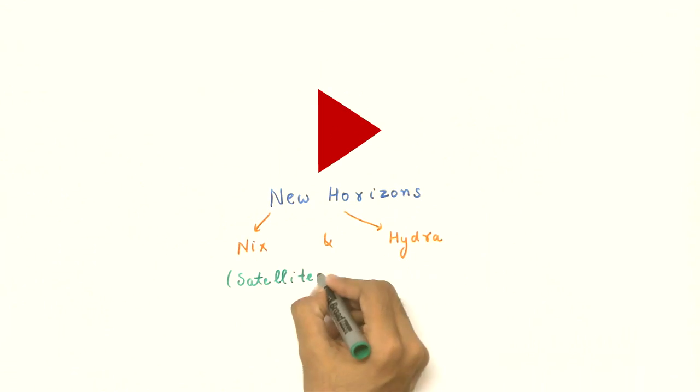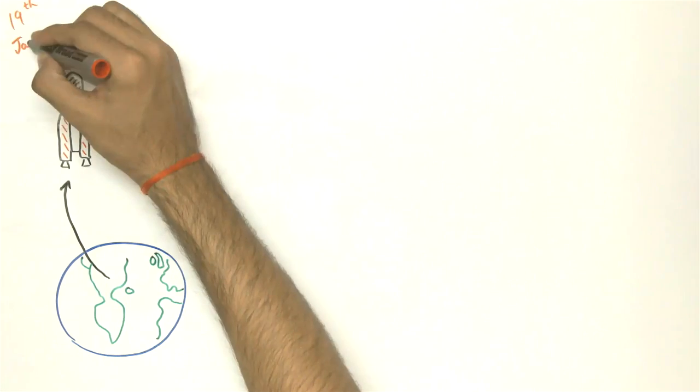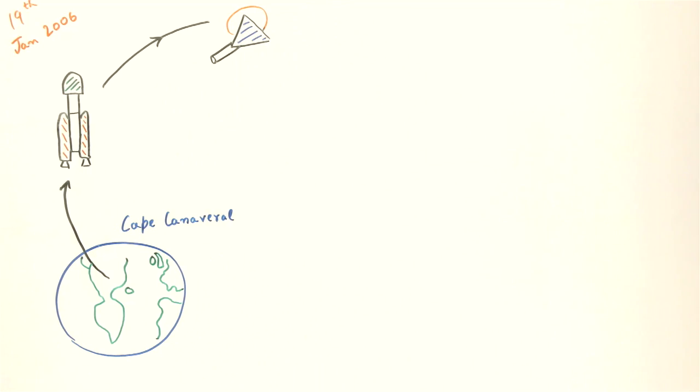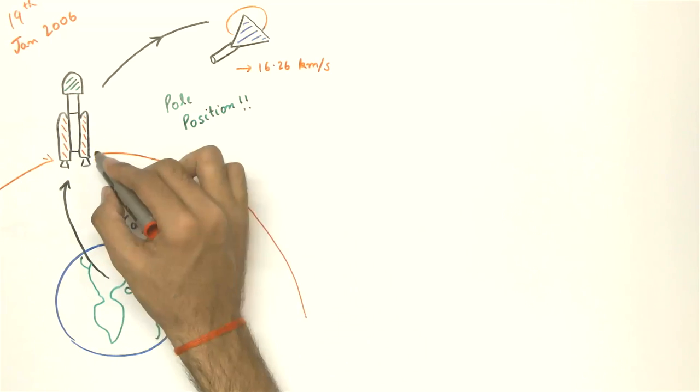NASA's New Horizons. New Horizons is NASA's mission to the Kuiper belt which flies by Pluto. Launched on 19 January 2006 from Cape Canaveral, directly into an escape trajectory with a speed of over 16 km per second, it set the record for the highest launch speed of a human-made object from Earth's sphere of influence.